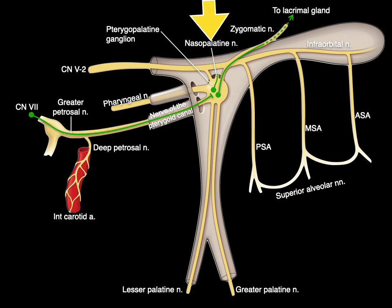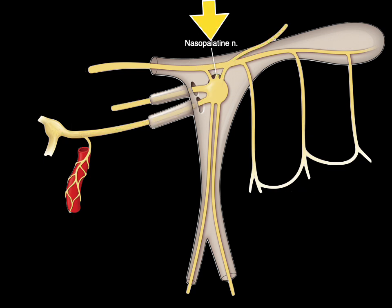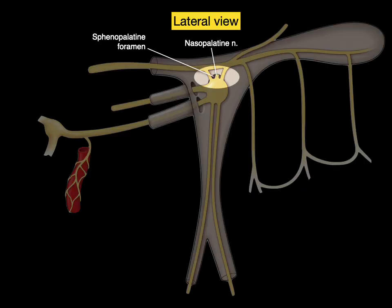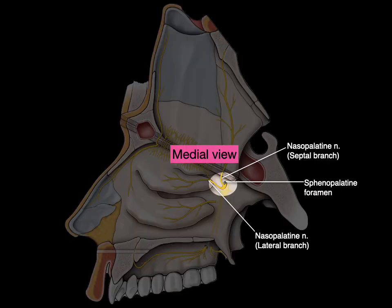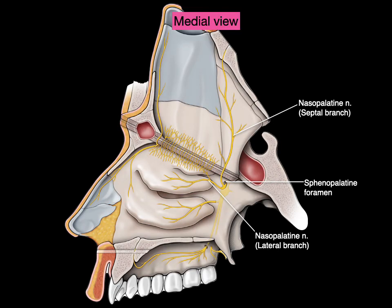We also have the nasopalatine nerve, which traverses the sphenopalatine foramen — remember, the sphenopalatine foramen is how we get into the nasal cavity. The sphenopalatine nerve, shown here in lateral and medial views, has a septal and lateral branch that provides general sensation to the nasal cavity.